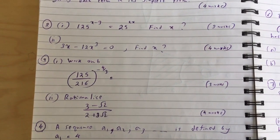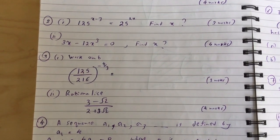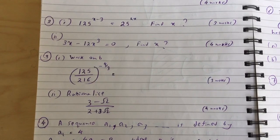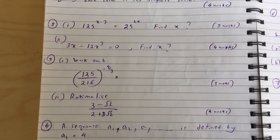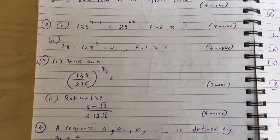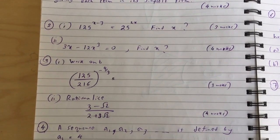Question 3: (i) Work out 125 over 216 to the power of minus 4 over 3. (ii) Rationalize 3 minus root 2 over 2 plus 3 root 2.